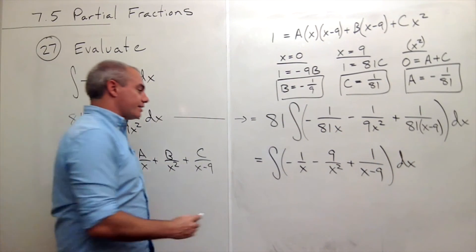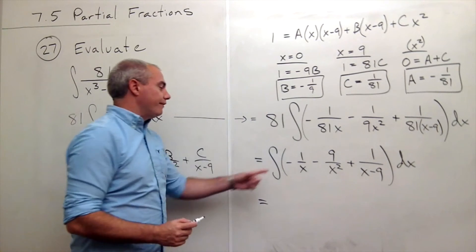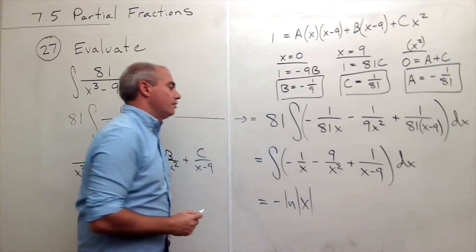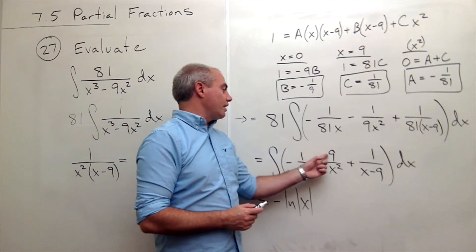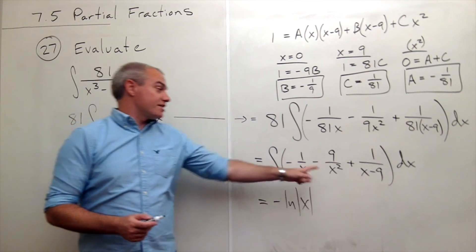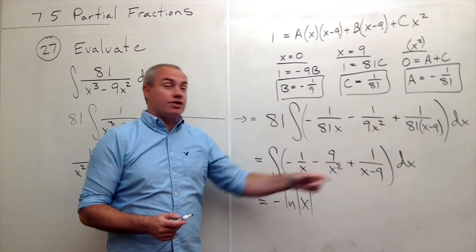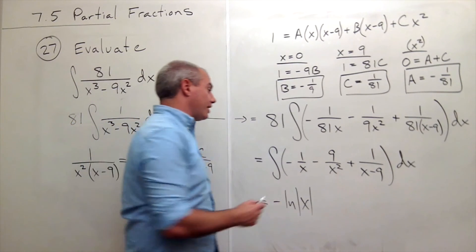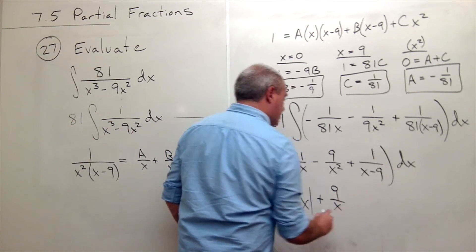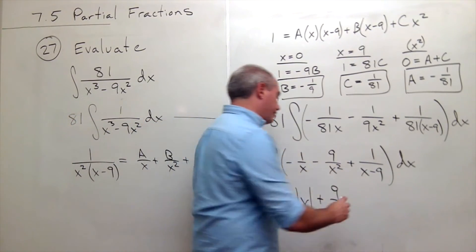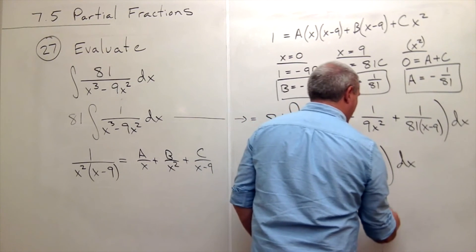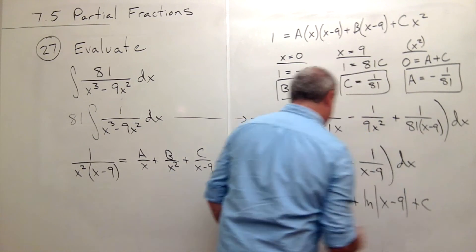Let's take the antiderivative. The antiderivative of negative 1 over x is negative ln of absolute value of x. The antiderivative of negative 9 over x squared, we bump the power of x squared up. This is negative x to the negative 2. Bump the negative 2 up to negative 1 and divide by negative 1, and we get plus 9 over x. And then finally this is also a natural log, so plus ln absolute value of x minus 9 plus C.